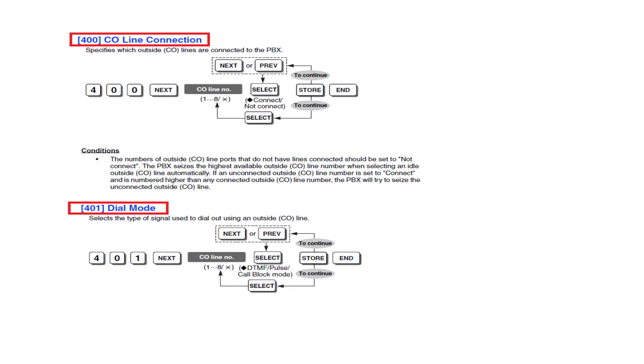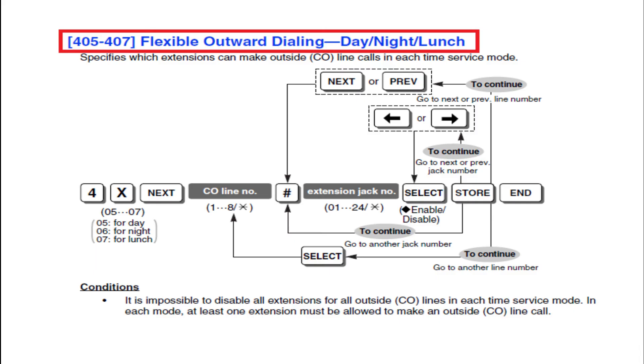You can select call block mode if you are not using now. Press 401 then SP phone select CO line then enter 1 for selecting CO1 and change the dialing mode to DTMF and store it. Program number 405, 406, 407 are using for outgoing call enabling and disabling. 405 for daytime, 406 for night and 407 for lunchtime.